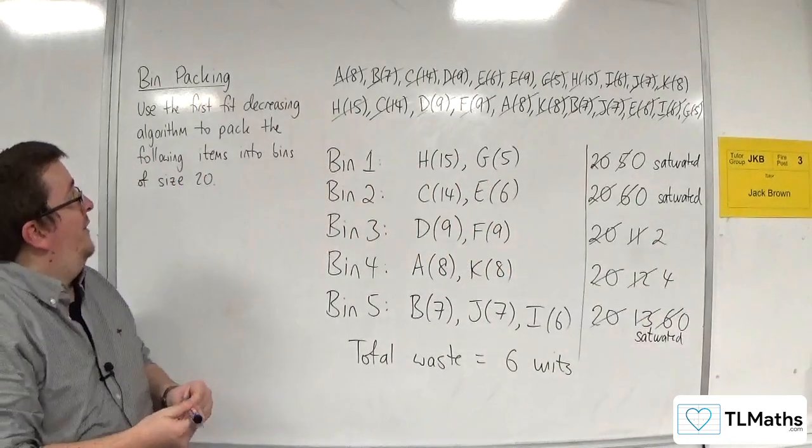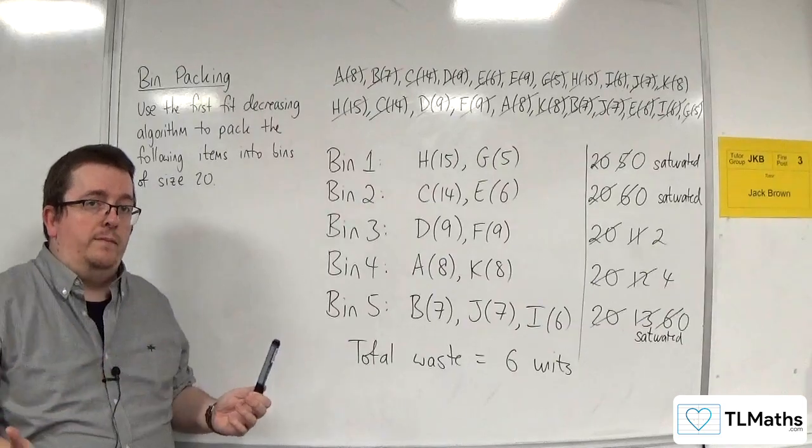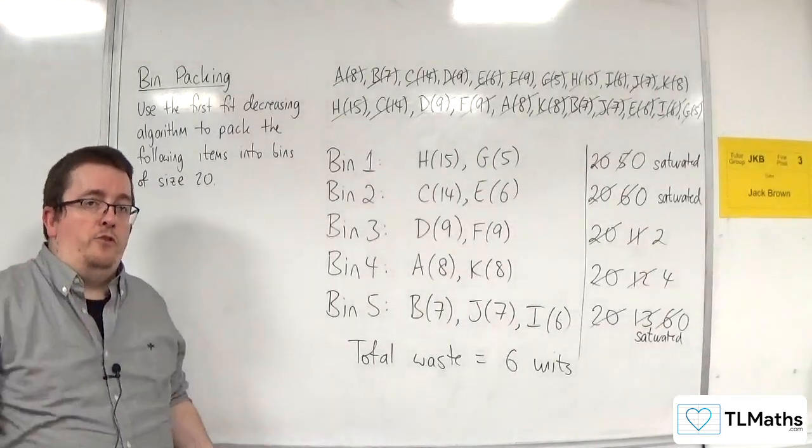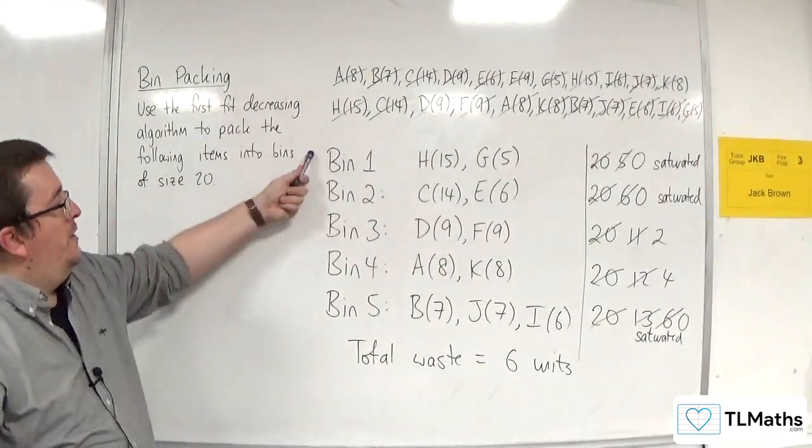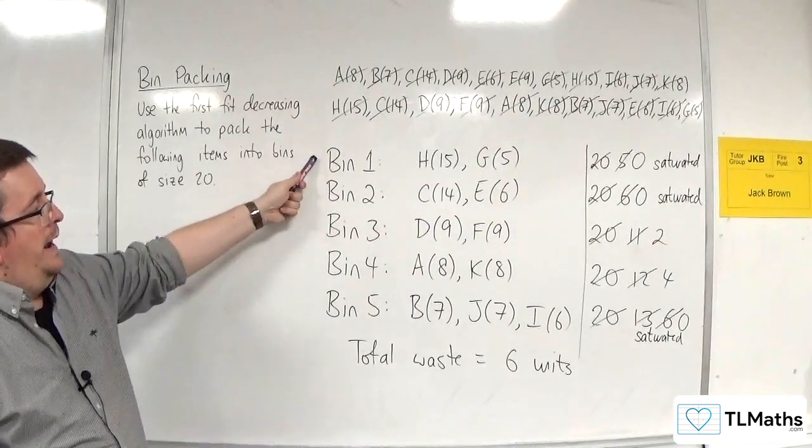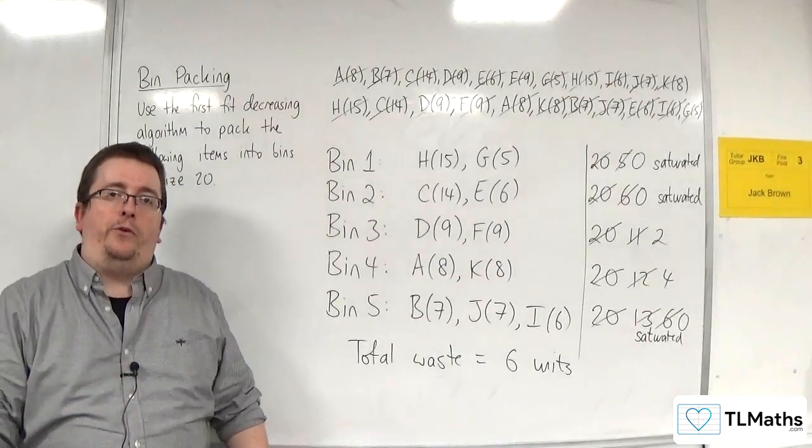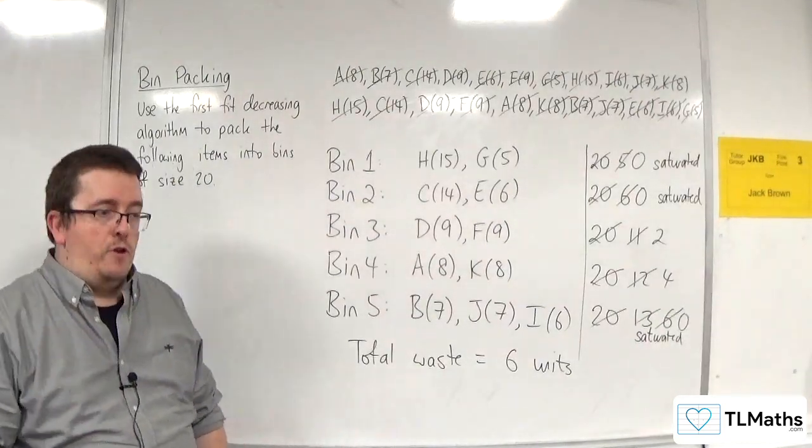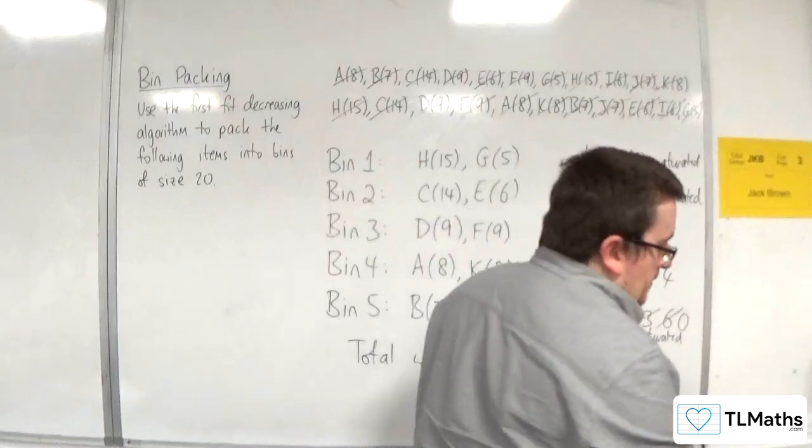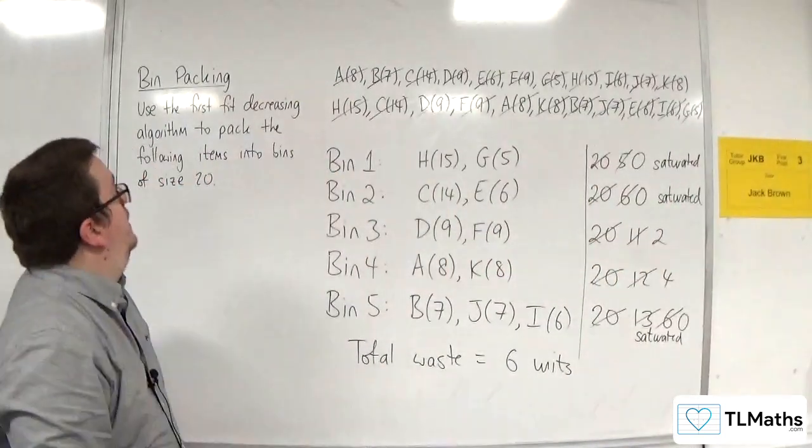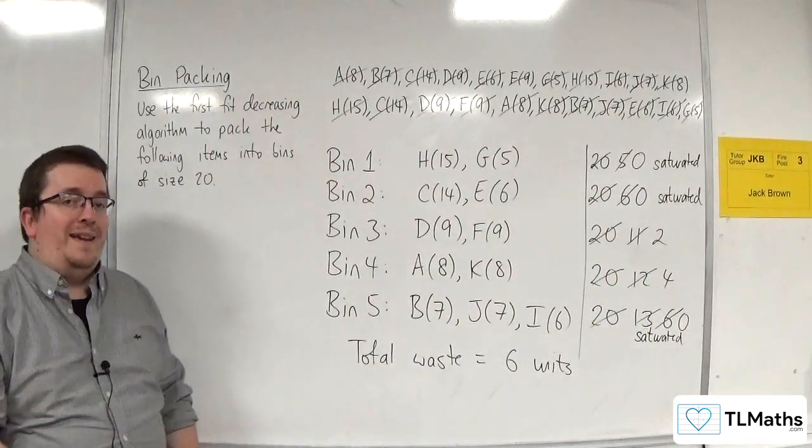So, in this situation, the first fit decreasing was better for me. If these were 5 lorries, for example, then I've managed to fit everything into 5 lorries rather than have to source another lorry, a 6th lorry, in order to get the job done. Okay. So, this is how we do the first fit decreasing algorithm.